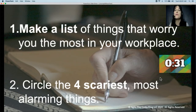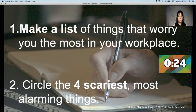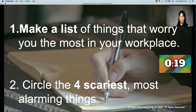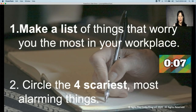Hopefully you've got a few things that worry you the most. Out of those things, circle the four scariest, most alarming ones — you're going to work with those four things in the next step. For the next step, flip the page to the other side and you're going to make a little grid.